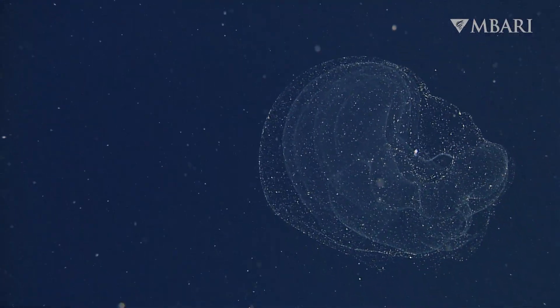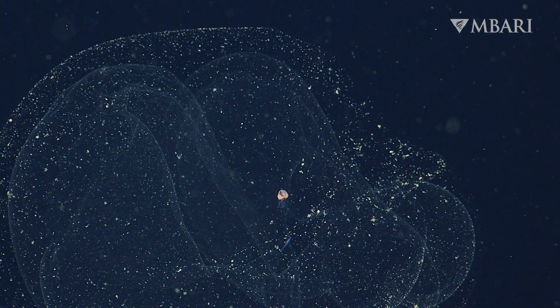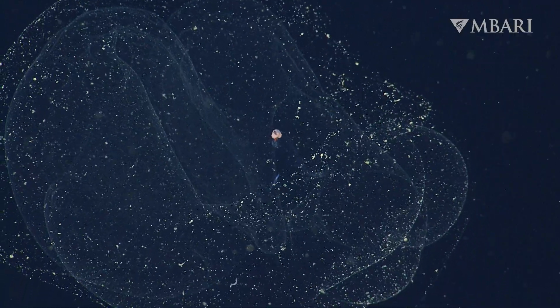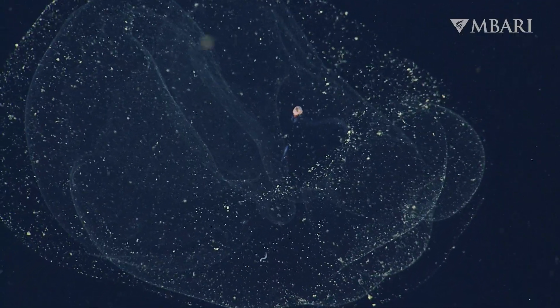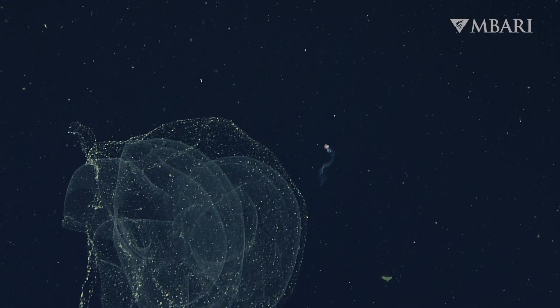We usually encounter redhead larvaceans inside their mucus houses. However, when their filters become clogged with particles or if they sense danger approaching, they will ditch their mucus home and swim away to build a new one.